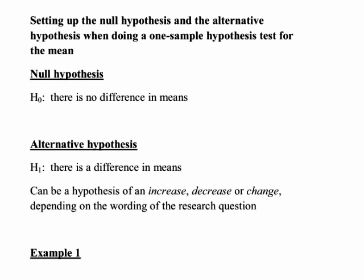In this recording we look at setting up the null hypothesis and the alternative hypothesis when doing a one-sample hypothesis test for the mean. We have a single sample of data and we want to use the mean of the sample to see whether we have evidence against the null hypothesis, which gives some fixed number as the possible value of the population mean. Let's have a look at a couple of examples of how we set this up.